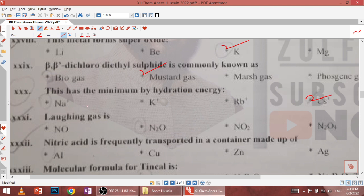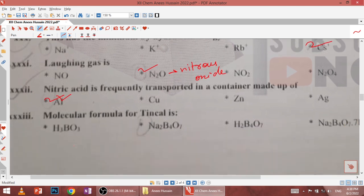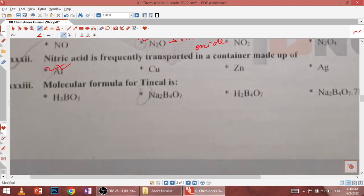Thirty-first, laughing gas is N2O which we also call nitrous oxide. Thirty-second, nitric acid is frequently transported in a container made up of aluminum because aluminum is passive towards nitric acid or aluminum never reacts with nitric acid. Next, the molecular formula of tinkal or borax is Na2B4O7.